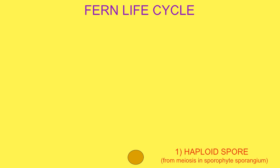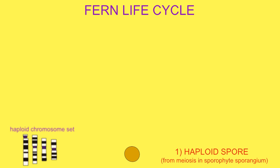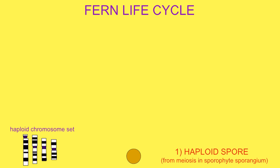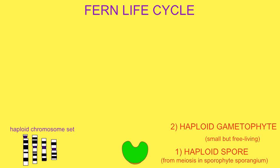The fern life cycle begins when haploid spores are produced from the meiosis which occurred in the spore mother cell in the sporangium of the sporocyte. These haploid spores germinate and undergo mitosis to produce a free-living photosynthetic gametophyte.